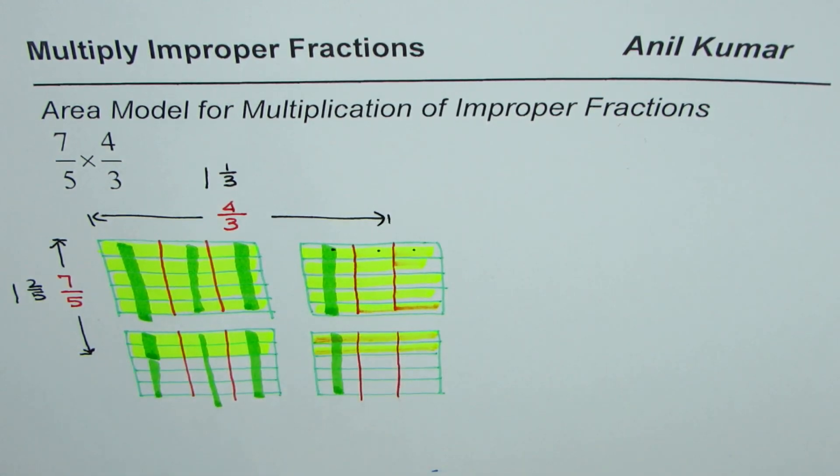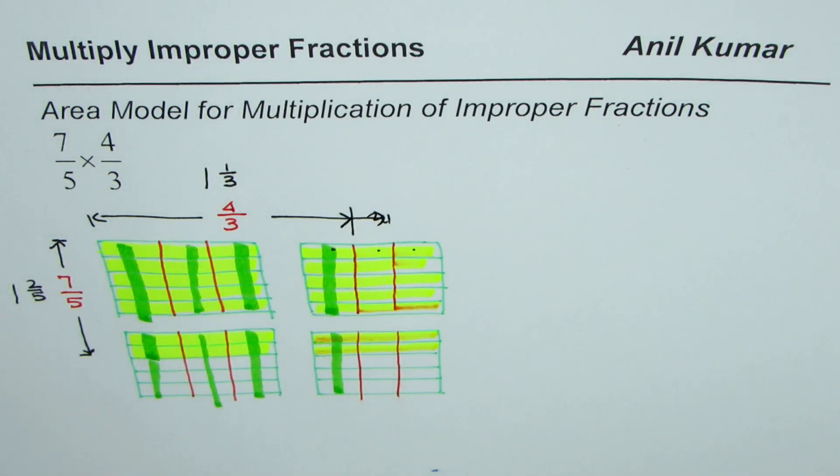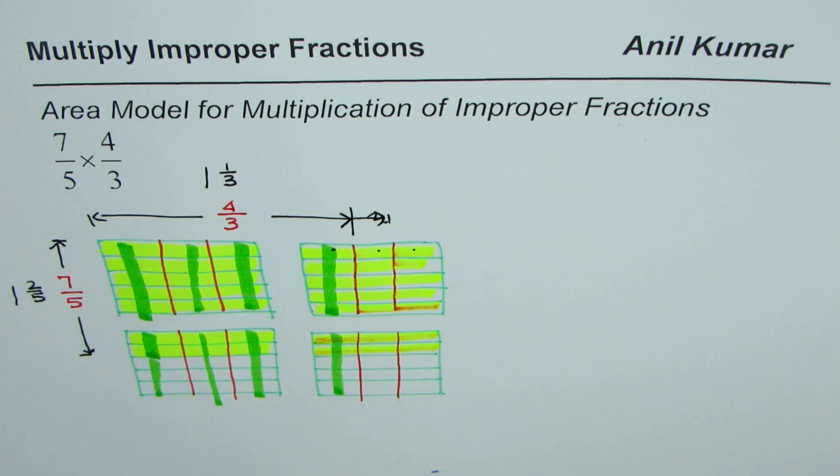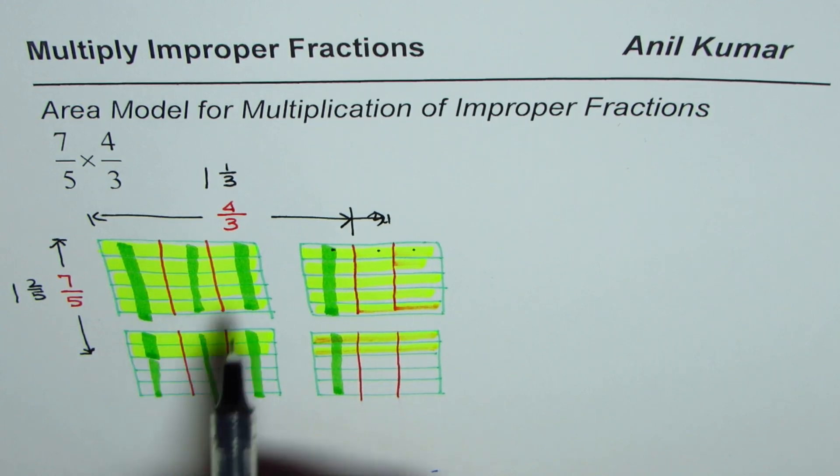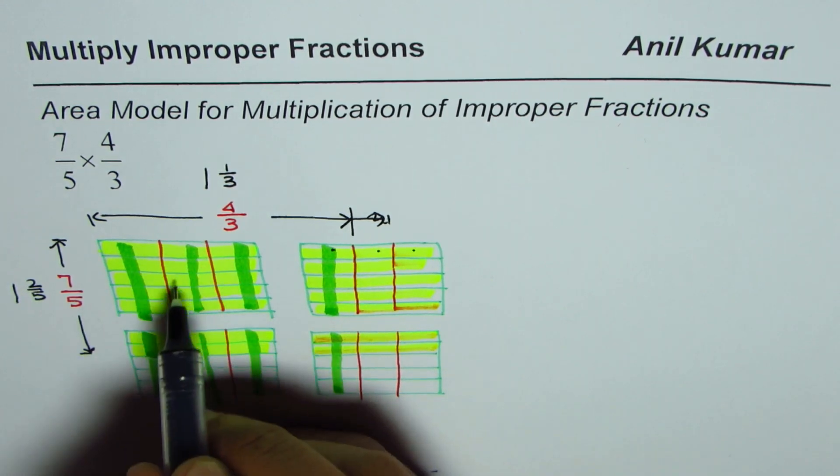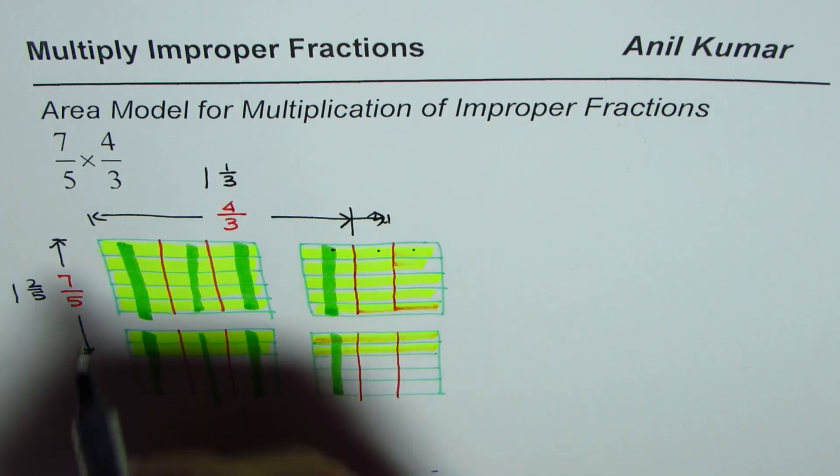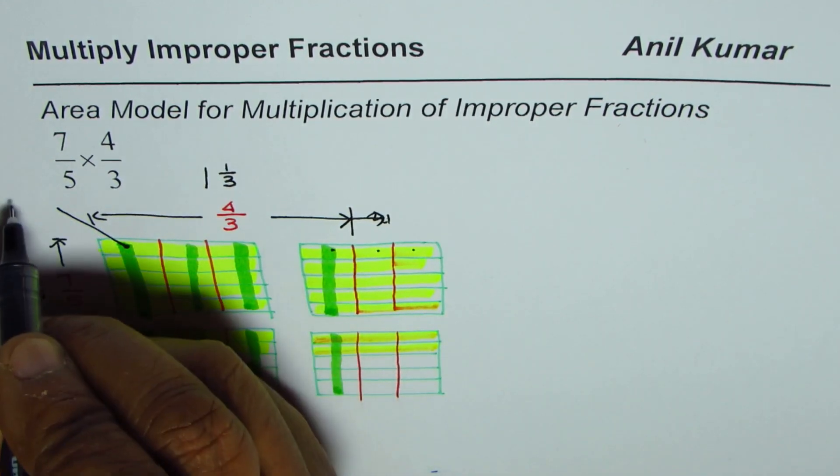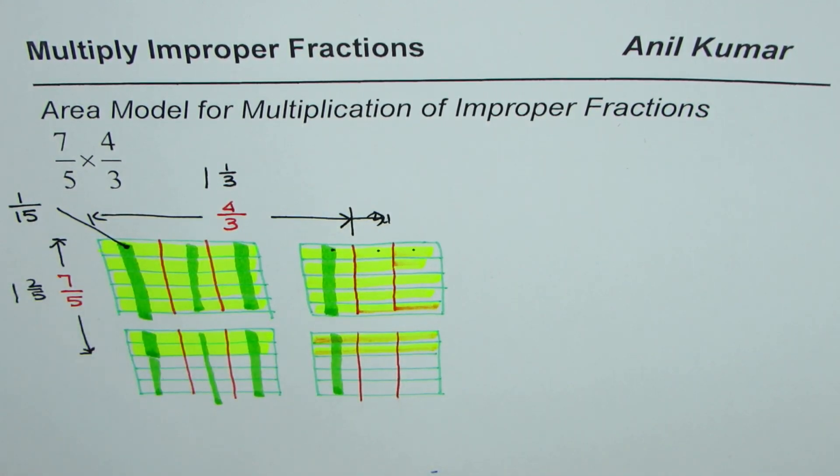Now the area is the portion which is common. This should be up to here, 4 out of 3. Now whenever you write the product, the denominator tells you that in one whole, how many parts are there? So to begin with, here we have 5 rows and 3 columns. So there we have 15 parts in all. So each division here is how much? Each is 1 out of 15. Each division is 1 out of 15.